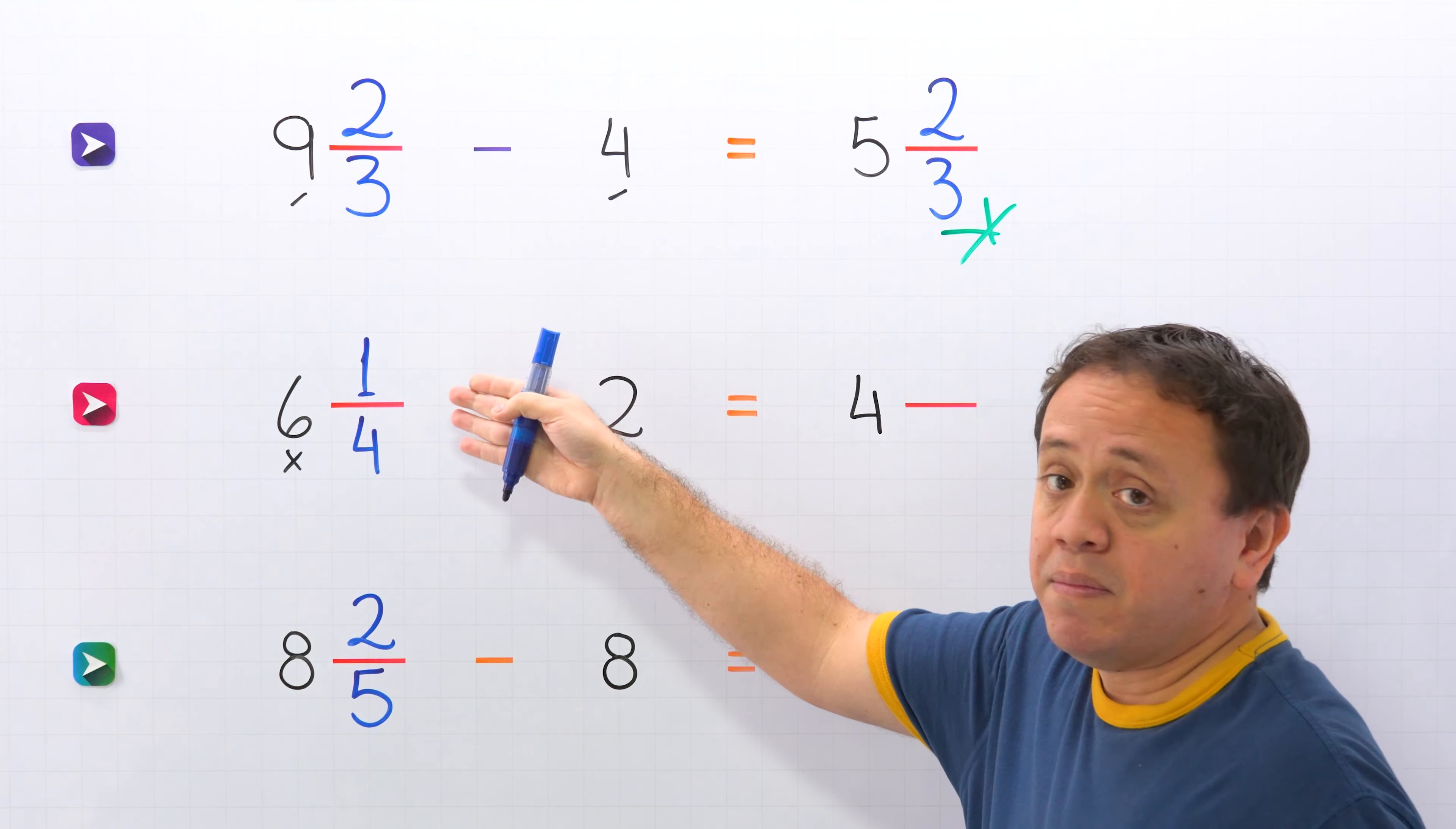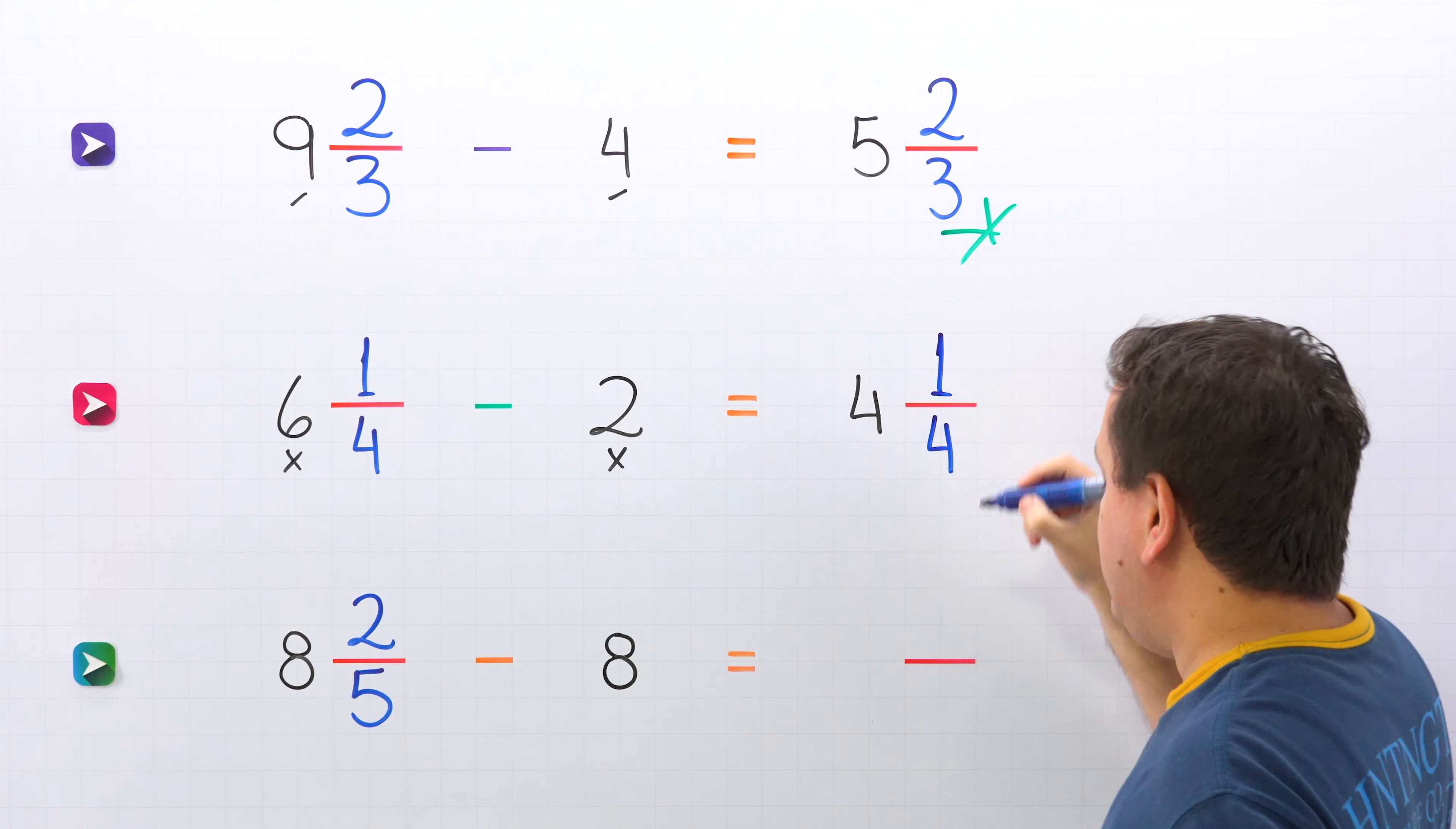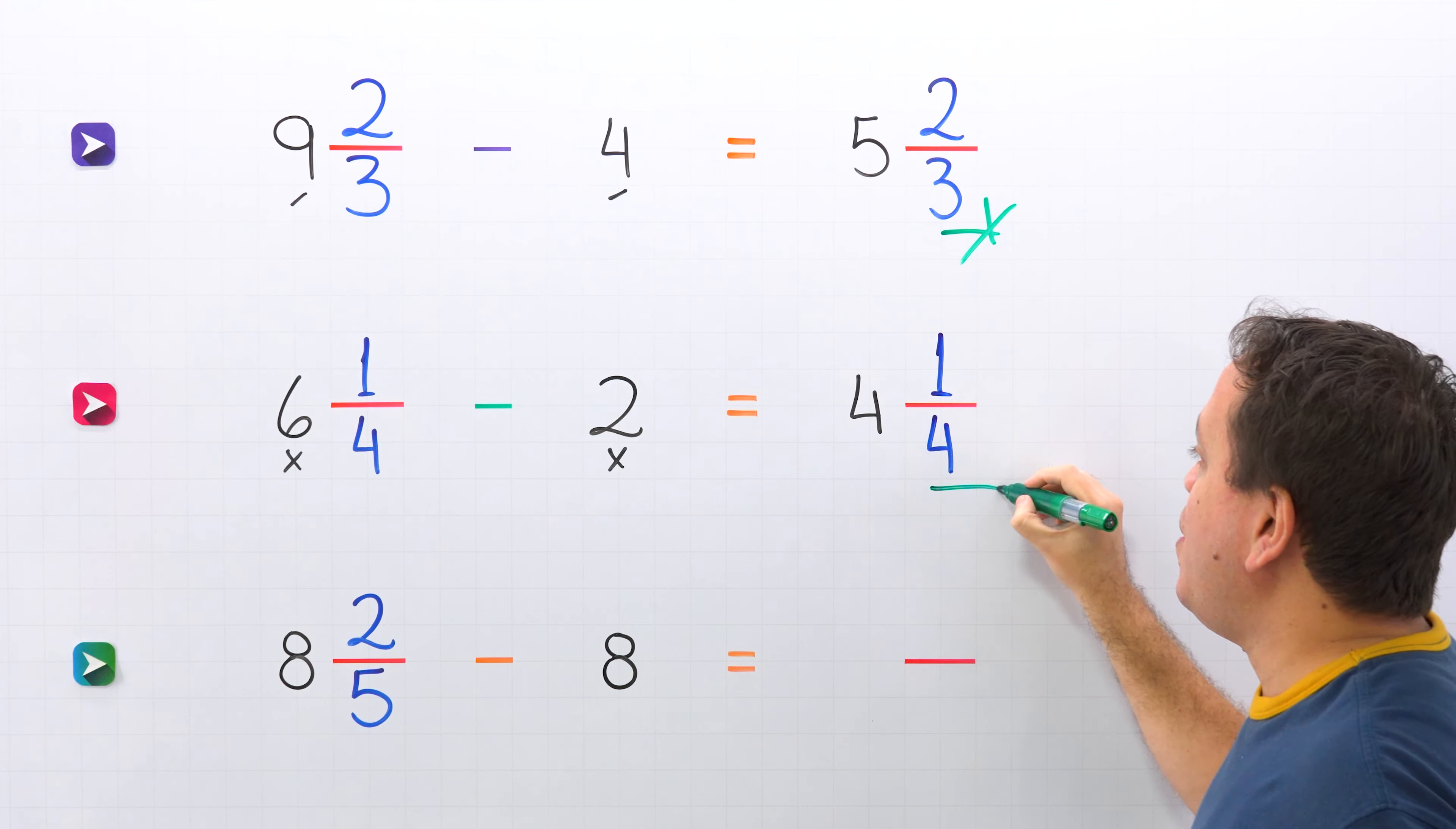Finally we copy the fraction of the mixed number. In this case it's one fourth. Therefore six and one fourth minus two gives us four and one fourth.